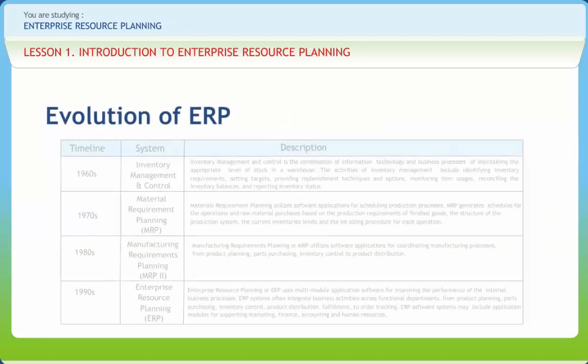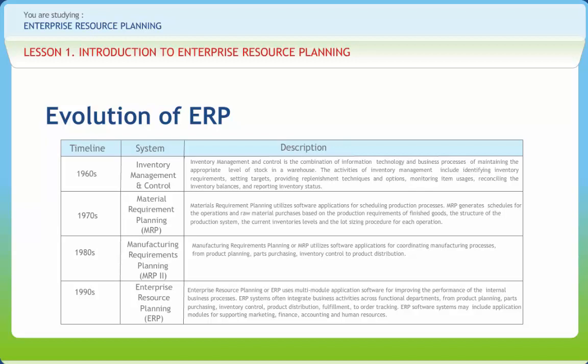Enterprise Resource Planning is the evolution of Manufacturing Requirements Planning, MRP2. From a business perspective, ERP has expanded from coordination of manufacturing processes to the integration of enterprise-wide back-end processes. From a technological aspect, ERP has evolved from legacy implementation to more flexible tiered client-server architecture. The table given in this slide summarizes the evolution of ERP from the 1960s to the 1990s.